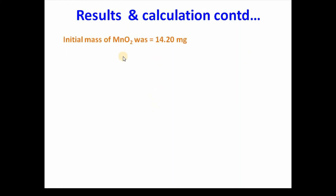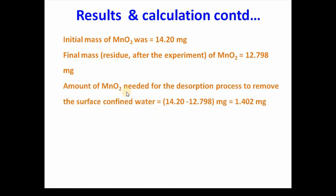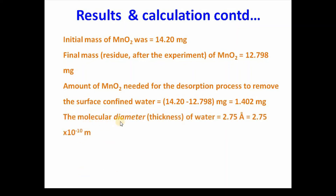The initial mass was 14.02 mg and the final mass residue after the experiment was 12.798 mg. The amount of manganese dioxide needed for the desorption process to remove the surface-confined water is 1.402 mg. We know the molecular diameter or thickness of water is 2.75 Å, and the density of ice is equal to 0.934 g per centimeter cubed.